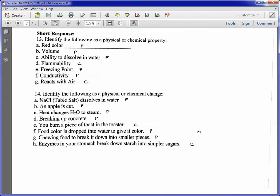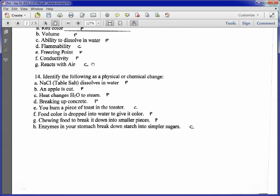Identify the following as a physical or chemical property. Red color, physical. I can identify it without changing its identity. Volume, same thing. Ability to dissolve in water. I'm not changing the identity of the compound. So it's going to be physical. Flammability, chemical. I'm changing the identity. Freezing point, anytime I'm changing the state of matter, it's going to be physical. I'm not actually changing the identity, just what state it's in. Conductivity, if you think about a wire with electrons moving through it, that's the conductivity, the ability to have electrons move through it. You're not actually changing the identity of the wire. You're just having electrons move through it. Reacts with air. Any time you see reaction, chemical, automatically.